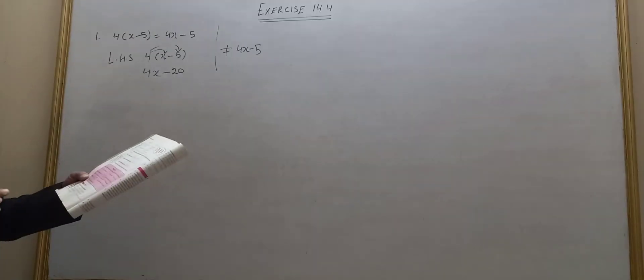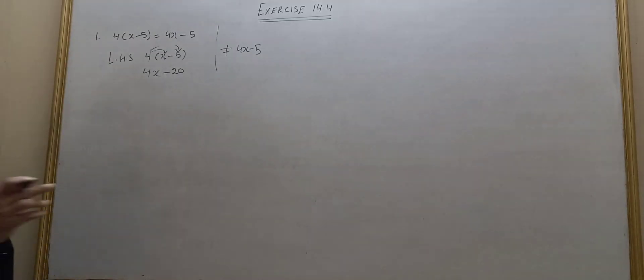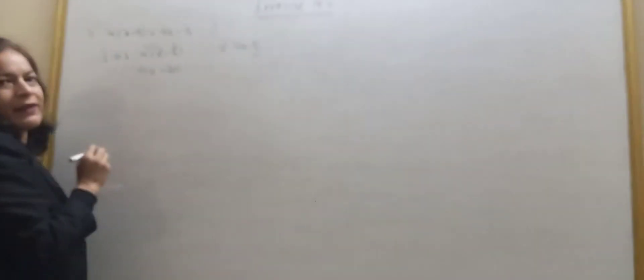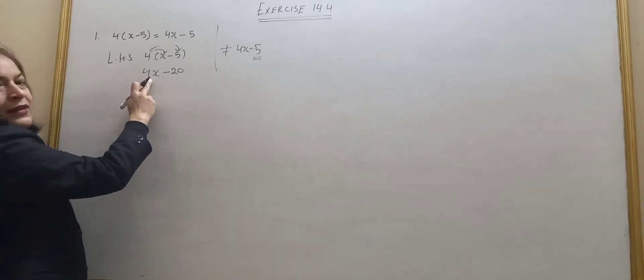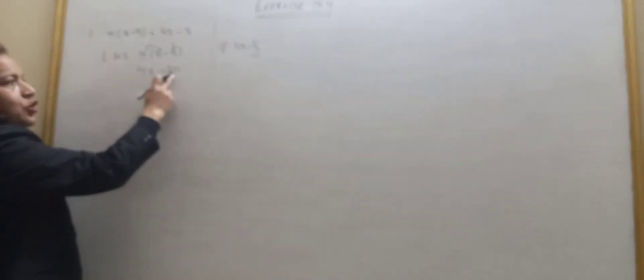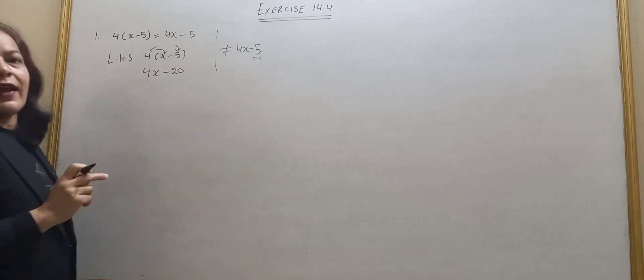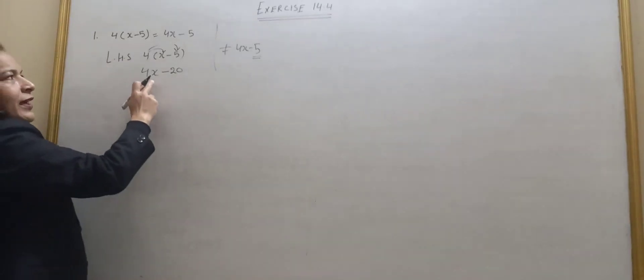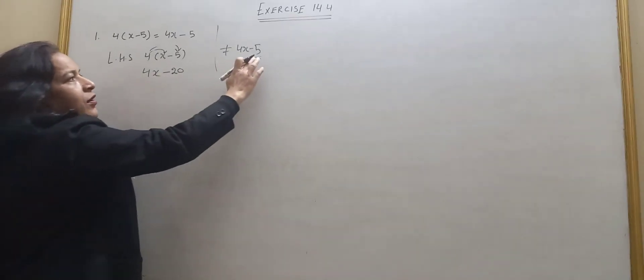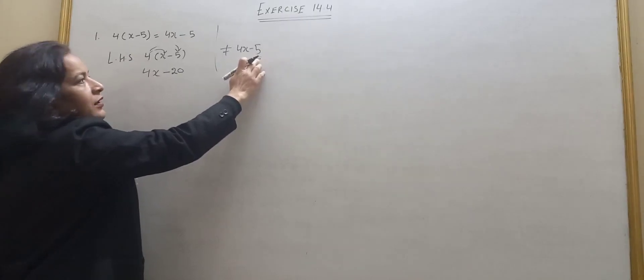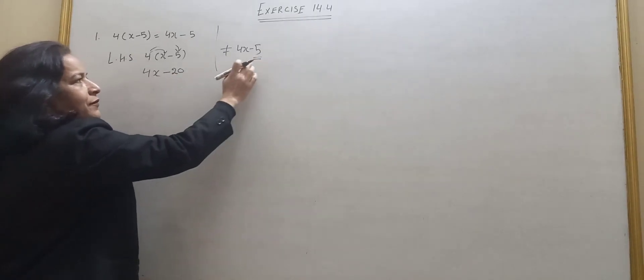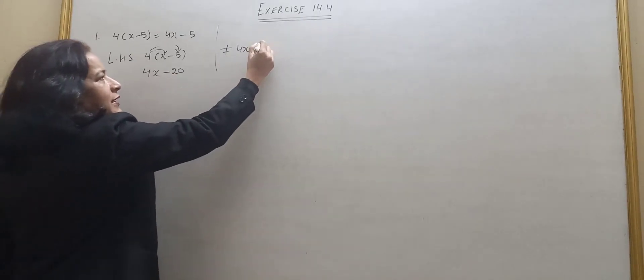This is not equal to right hand side. The error is here: it is minus 5, but here it should be minus 20. So I have already corrected the error. Where is the error? Minus 5 here — we need minus 20 here. So this is the error.